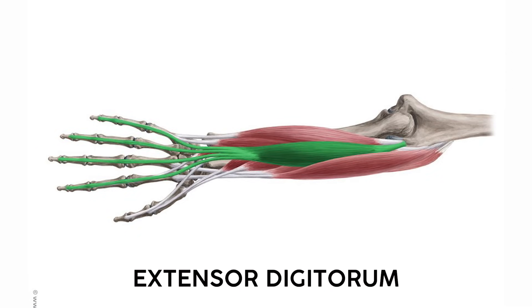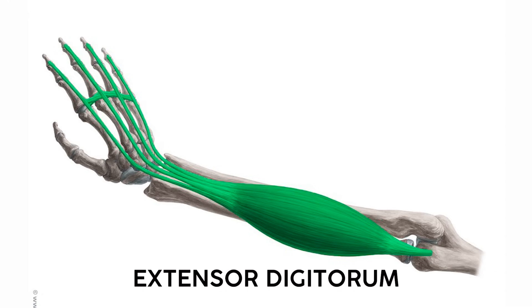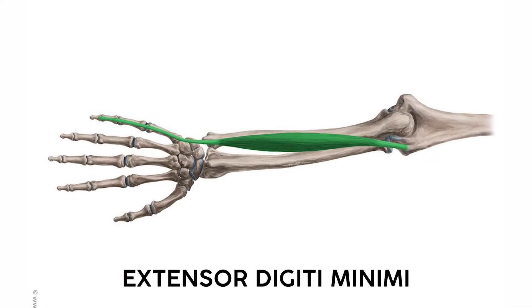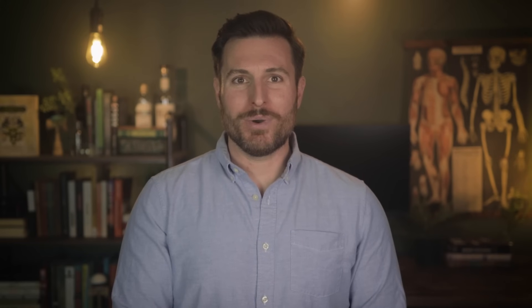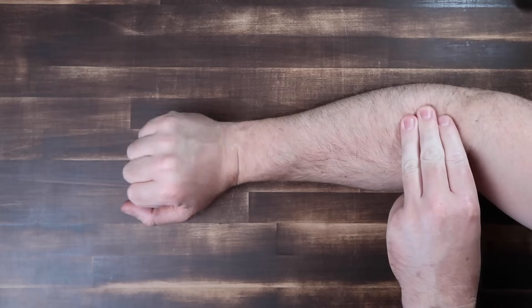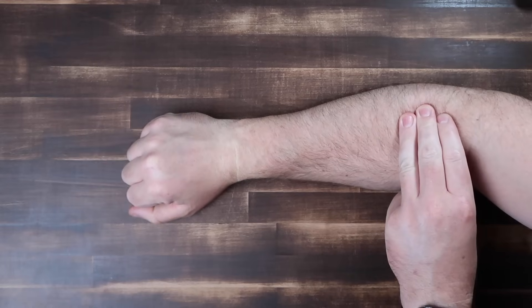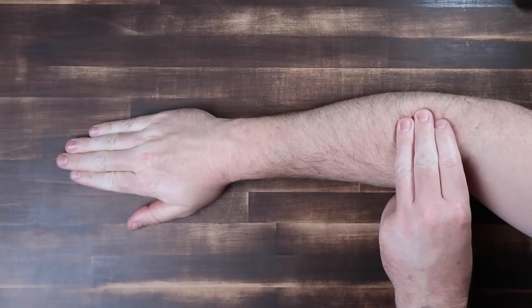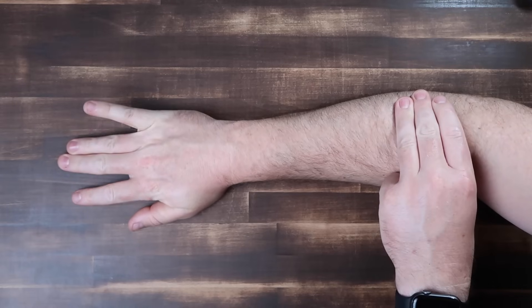The extensor digitorum extends the fingers — it's got a big muscle belly on the forearm and inserts on the dorsal side of the hand. Likewise, the extensor digiti minimi extends a finger, but adorably, only the tiniest, most minimal finger: the pinky. You can feel all of these too — if you put your arm down on the table, you'll feel the different muscles pop up for the whole hand, or just the fingers, or just the pinky. It's a great technique to come back to if you're ever lost on a test.